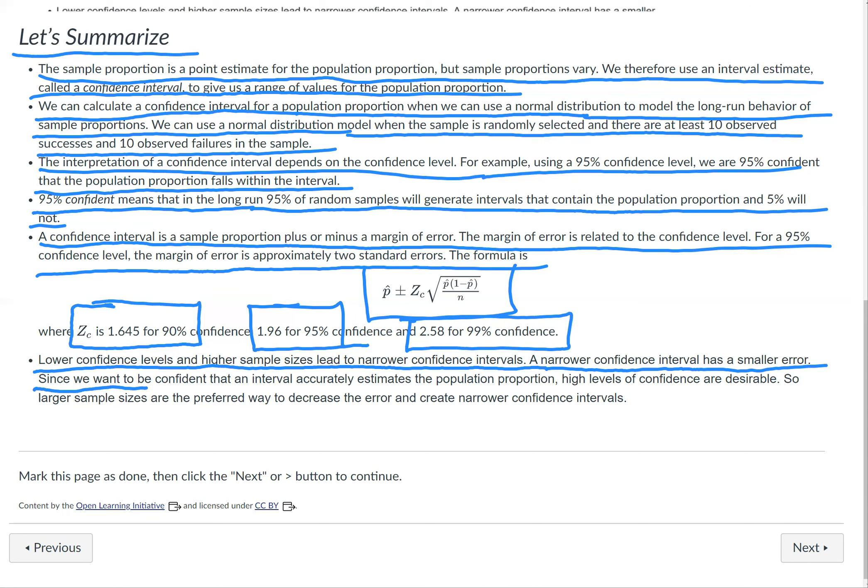Since we want to be confident that an interval accurately estimates the population proportion, high levels of confidence are desirable. So larger sample sizes are the preferred way to decrease the error and create narrower confidence intervals.